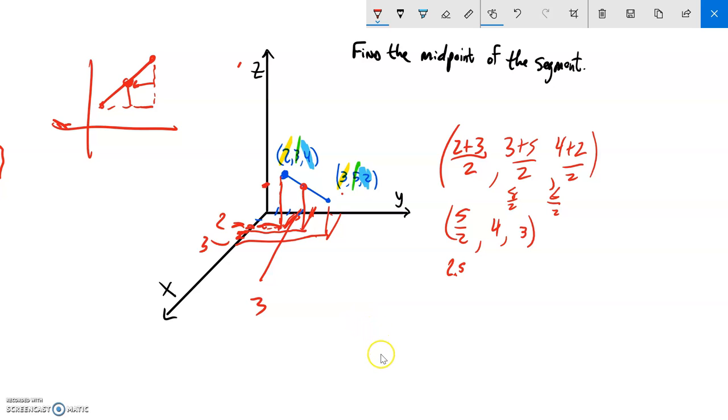Right, the three and the five, what's right between those, that's the four. So that's that direction. And then again with the z, same thing. My z values are two and four, what's right between those, three. So that would be the midpoint for it.